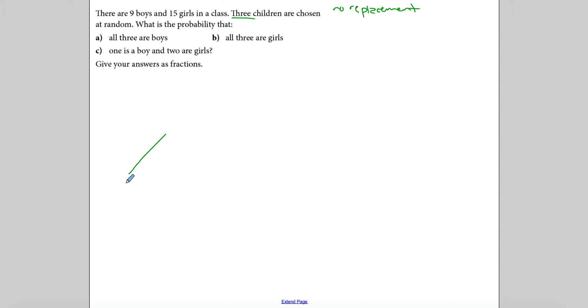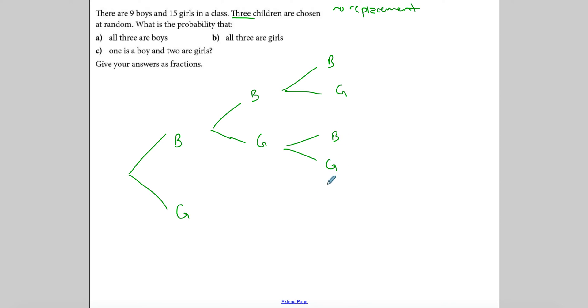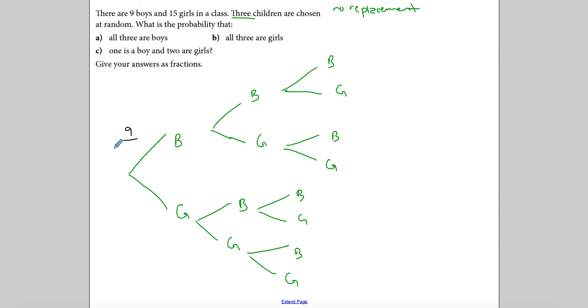The tree has three levels. First pick: P(boy) = 9/24, P(girl) = 15/24, since 9+15=24. If I pick a boy, I have one less boy and one less total: second pick has 8 boys or 15 girls out of 23. Going boy again: 7 boys or 15 girls out of 22. The denominator decreases by one each time a person is selected.